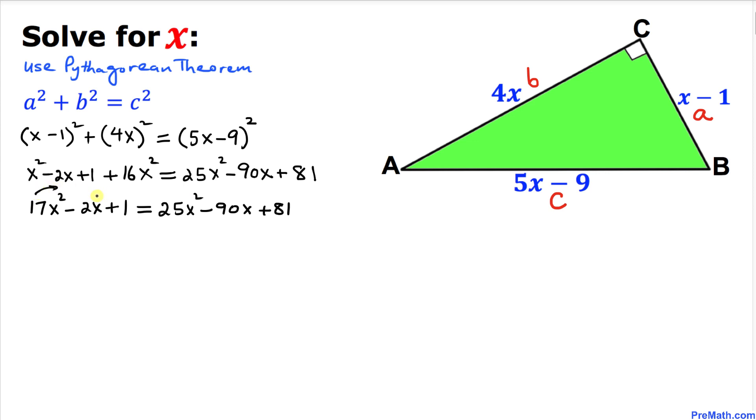Let's move everything to the right hand side. We can write it as 25x squared minus 90x plus 81, and when we move this to the other side, it becomes negative 17x squared plus 2x minus 1 equals 0.